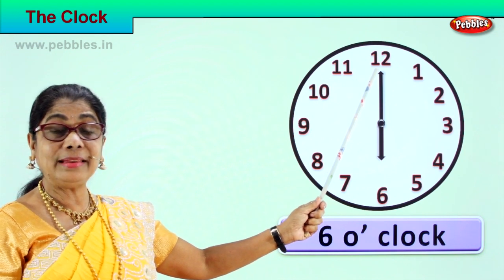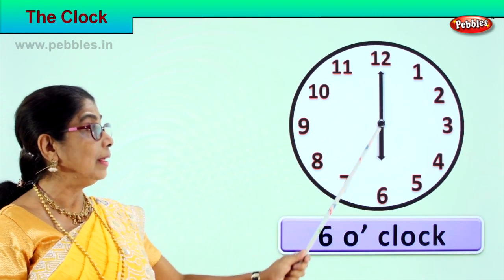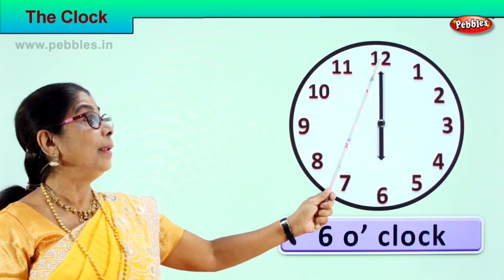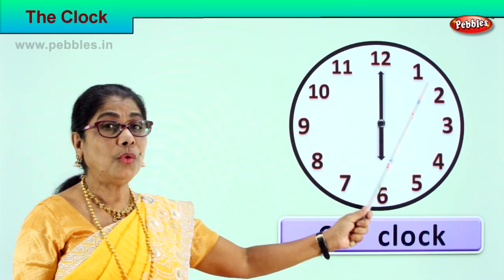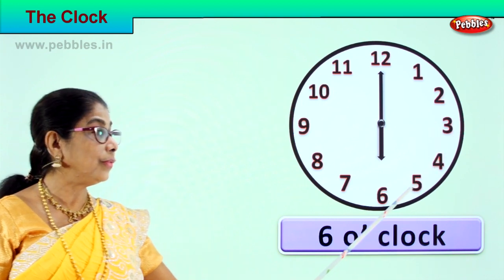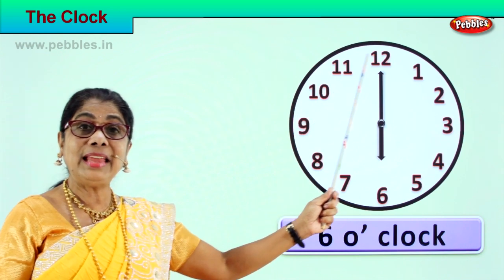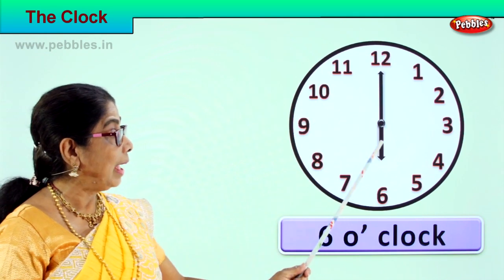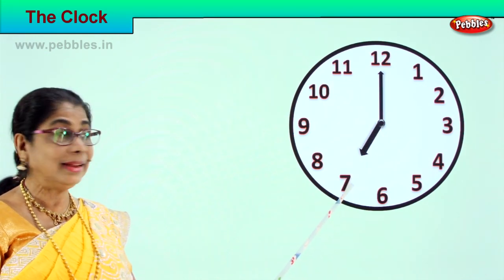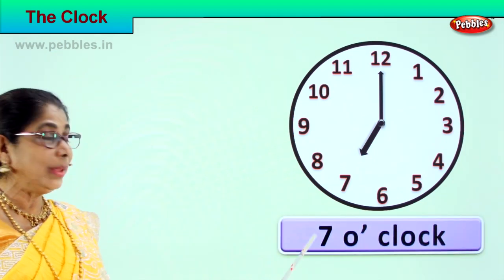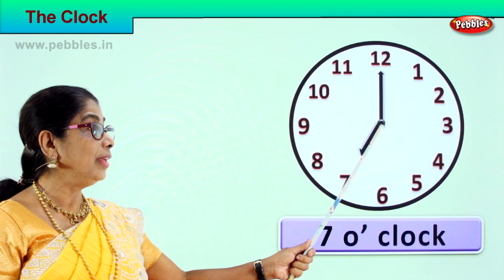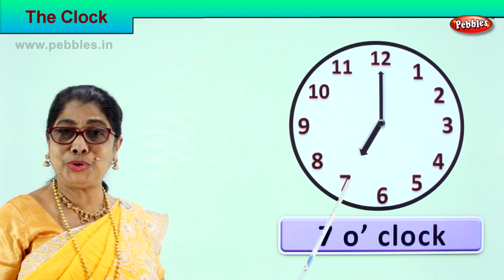Now the minute hand goes from one to two, three, four, five, six, seven, eight, nine, ten, eleven — it comes back to twelve and the hour hand shifts from six to seven. Look at the position — the hour hand is on seven. What is the time now? The time is seven o'clock. The hour hand is pointing towards seven and the minute hand stays at twelve.